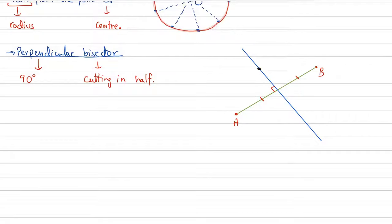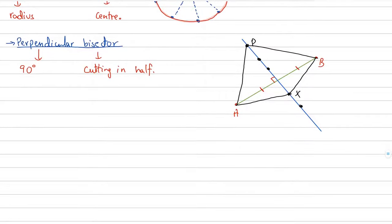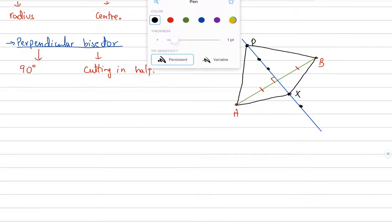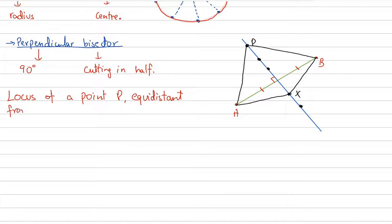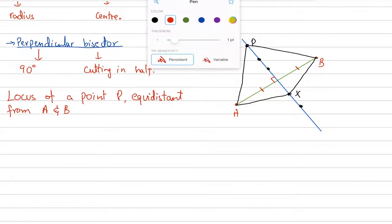If you have two points A and B joined by a straight line, the perpendicular bisector cuts the line in half at 90 degrees. Every point lying on the perpendicular bisector is equidistant from A and B.